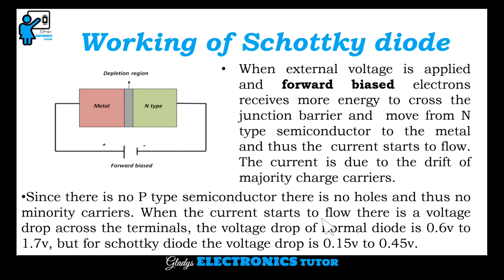When the current starts to flow, there is a voltage drop across the terminals. The voltage drop of a normal diode is 0.6 volt to 1.7 volt. But for the Schottky Diode, the voltage drop is 0.15 volt to 0.45 volt.